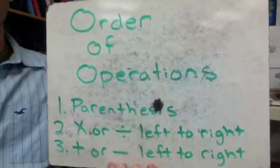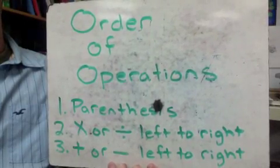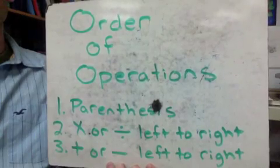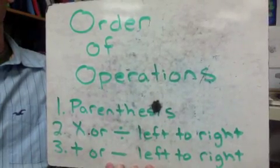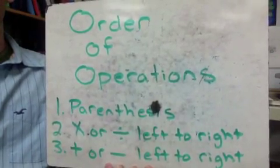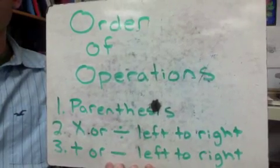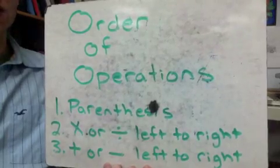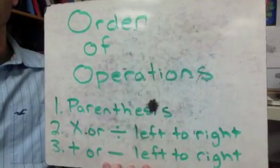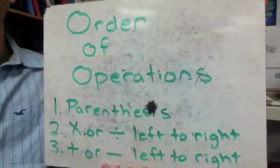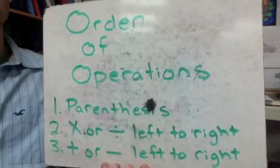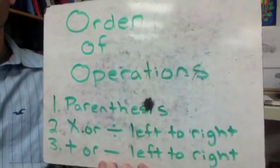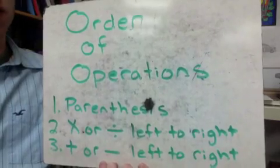Order of operations is basically a set of rules that you follow for any problem that you do, stating what you should do first, second, third, and so on. Throughout this process, I will give you as close to a foolproof method as I've figured out in order to solve these problems.